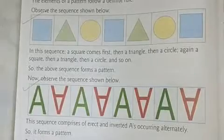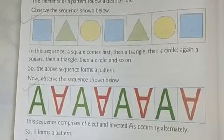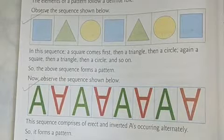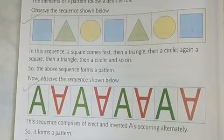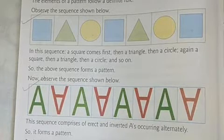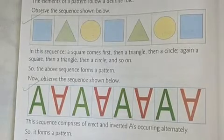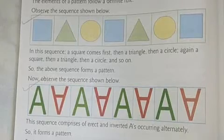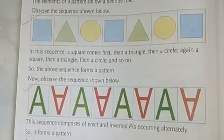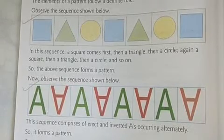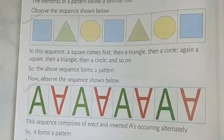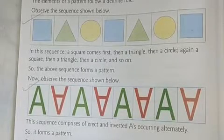Now see the third pattern — the buttons. In the first box there is one button, in the second box two buttons, then three buttons, then four, then five, then six. In this way it continues. Each step they are adding one button, and that is how the pattern is going on.